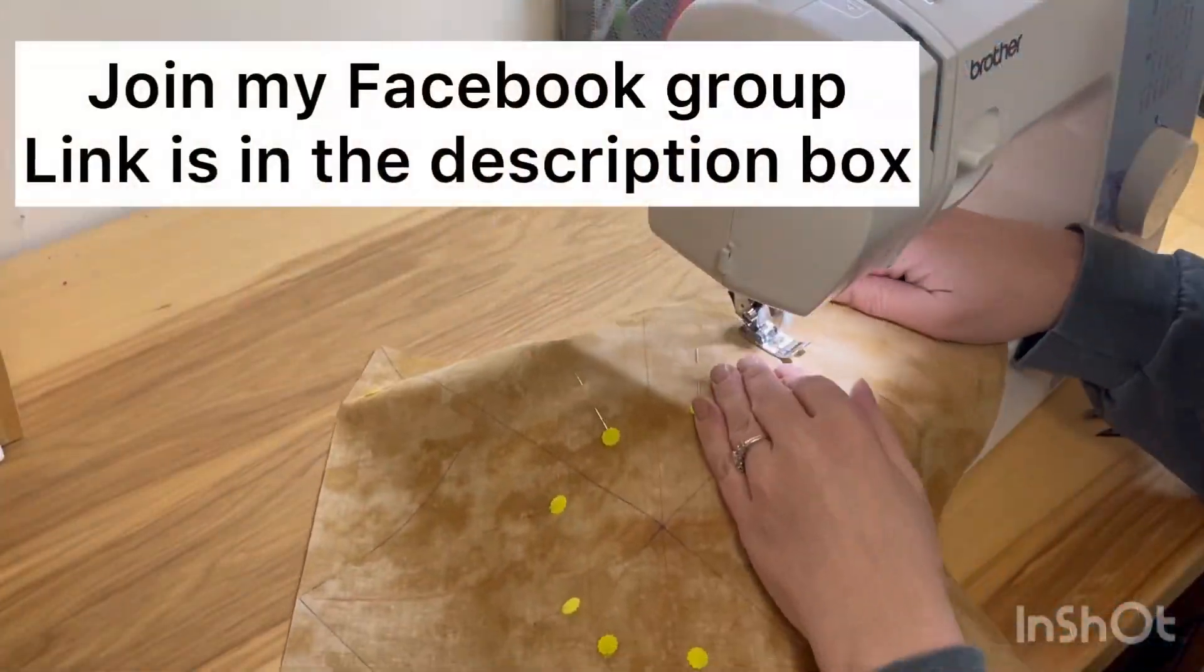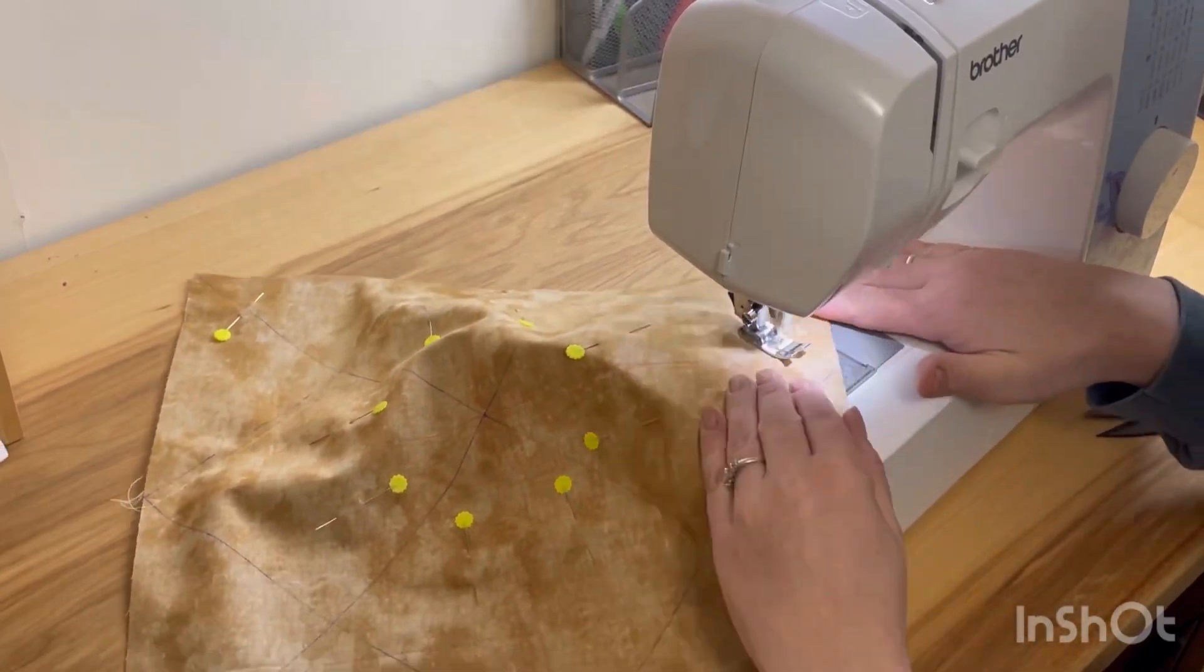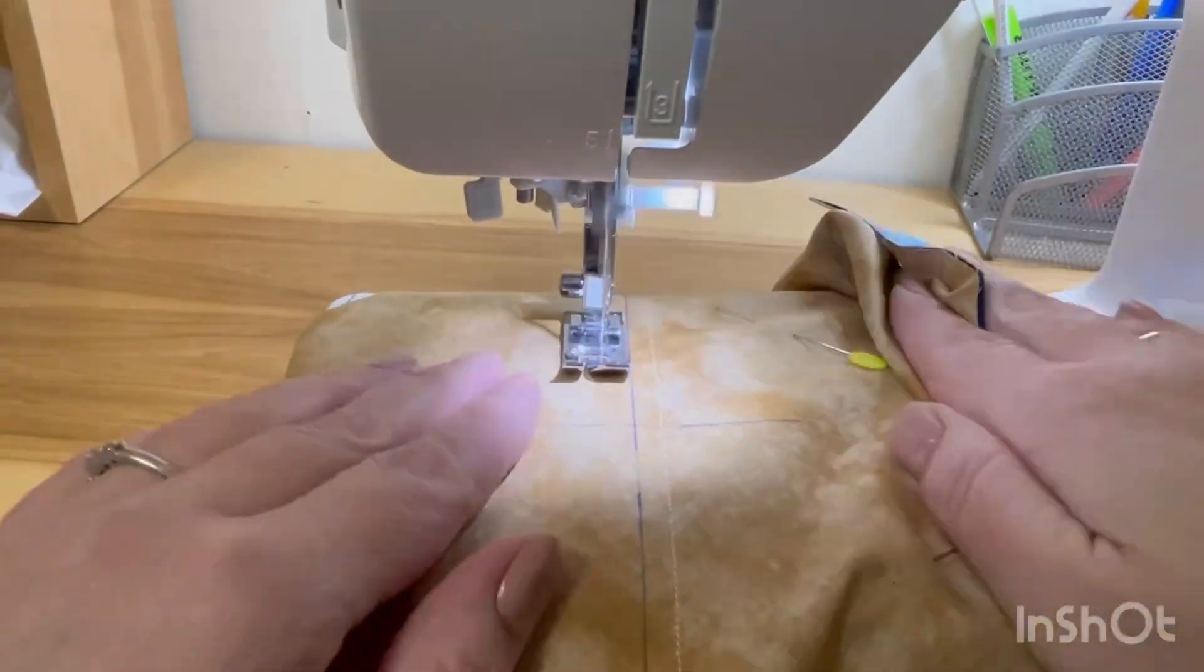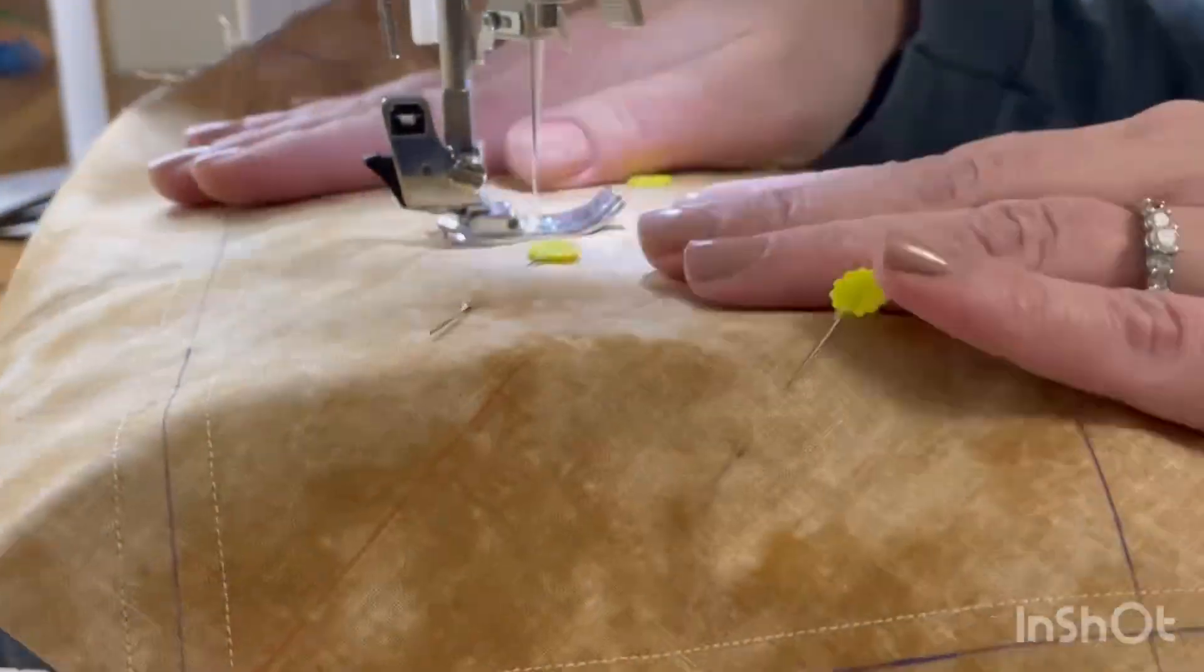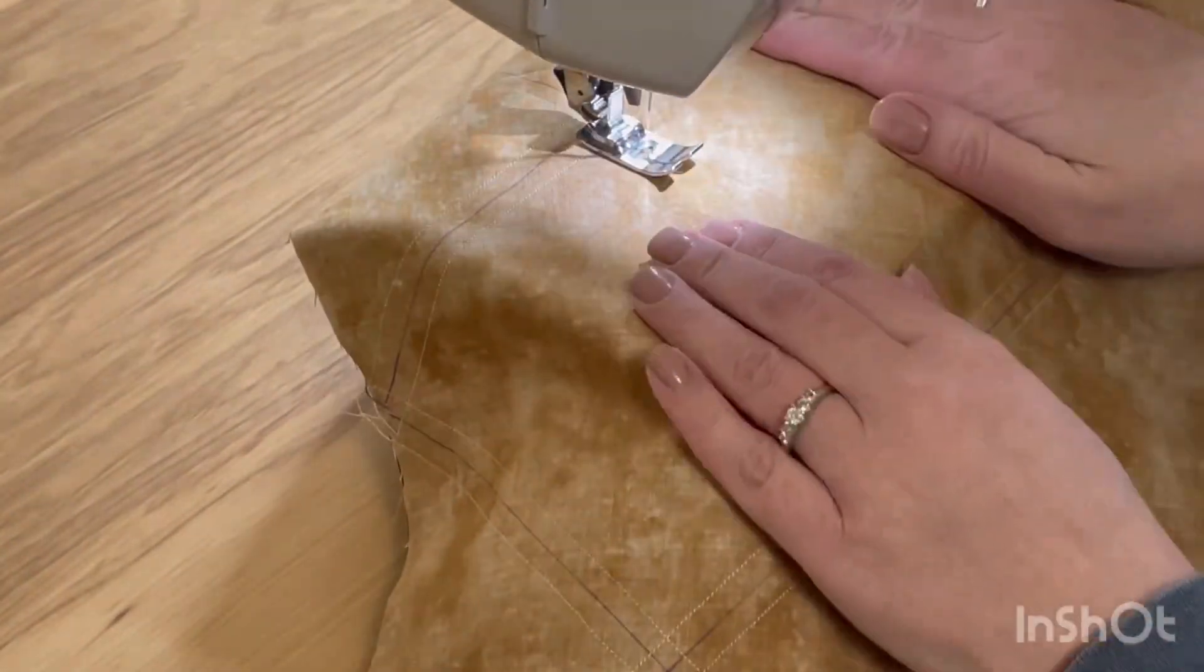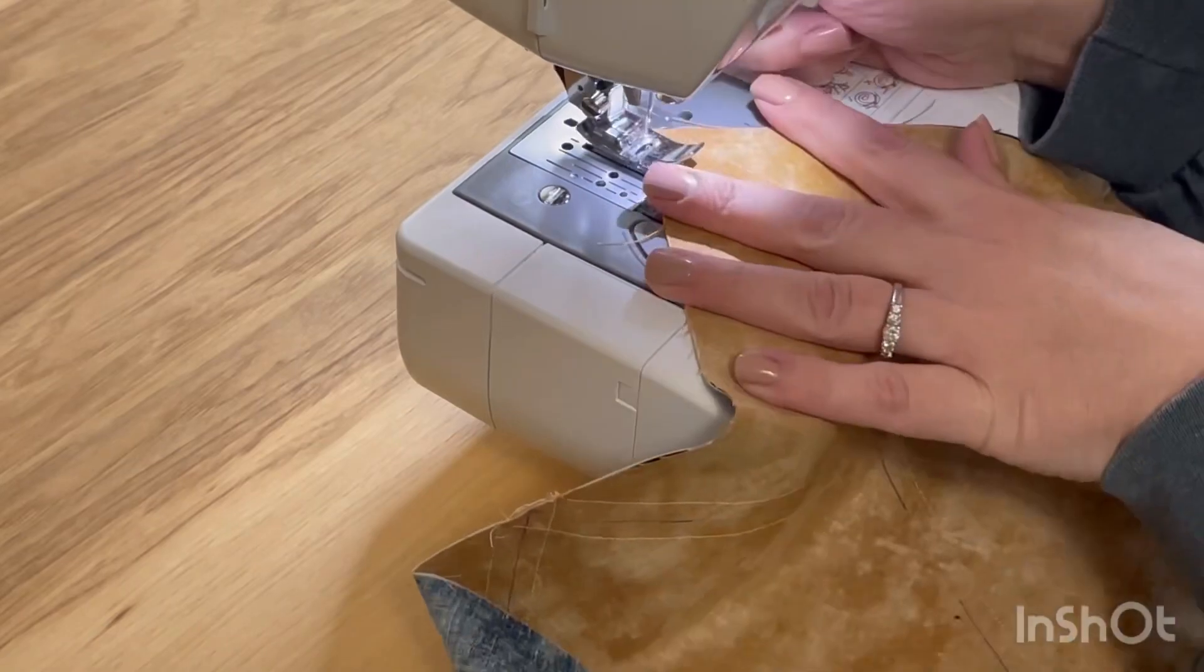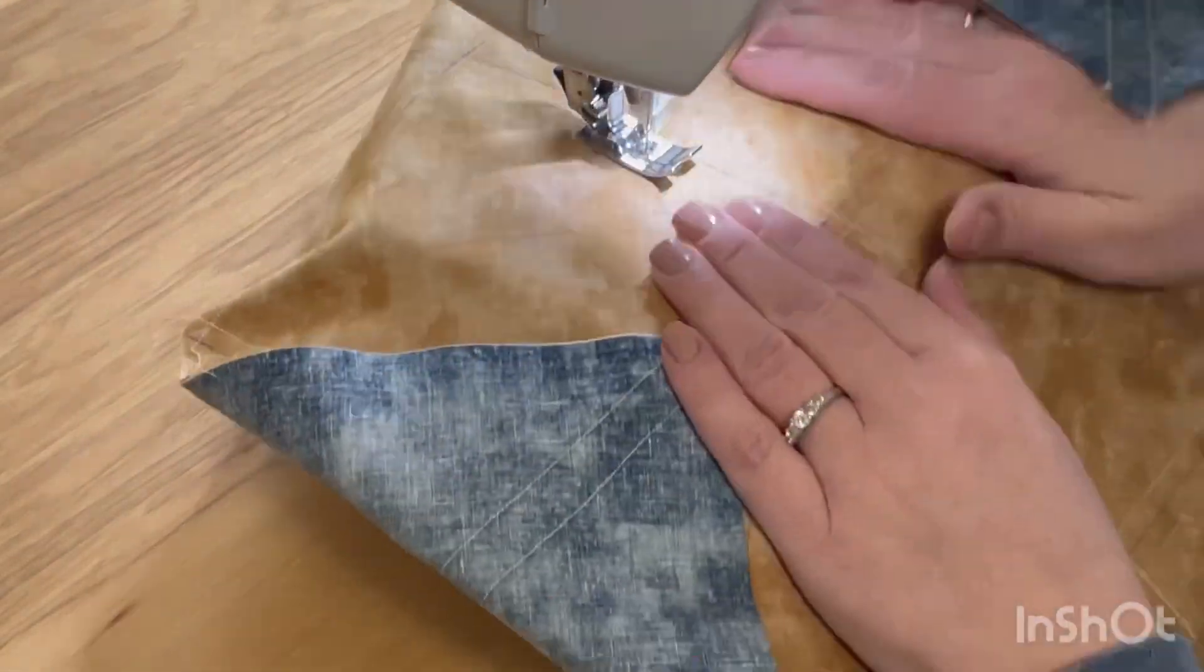Now you just want to take all your diagonal lines and sew one quarter inch on either side of those lines. I just find this a lot easier than having to cut 64 triangles and sewing them together to make 32 half square triangles. Like this I just have two pieces of fabric, I'm sewing a bunch of lines and then make a few cuts and then I have my 32 half square triangles. It's a lot faster in my opinion.